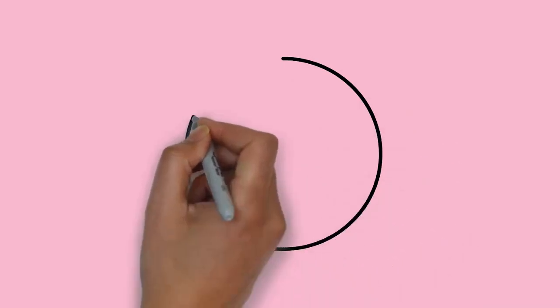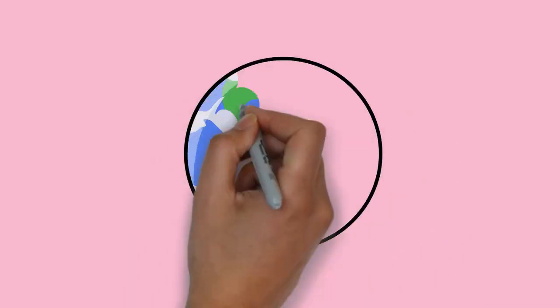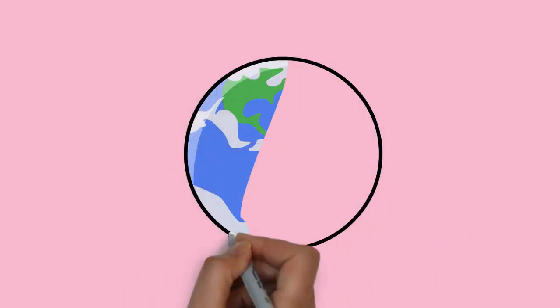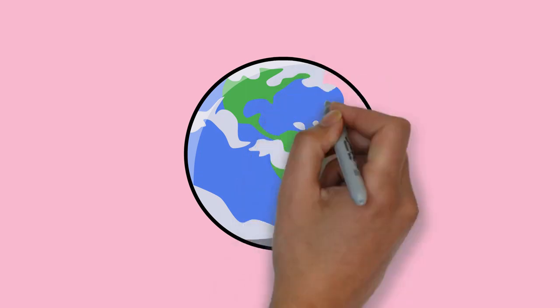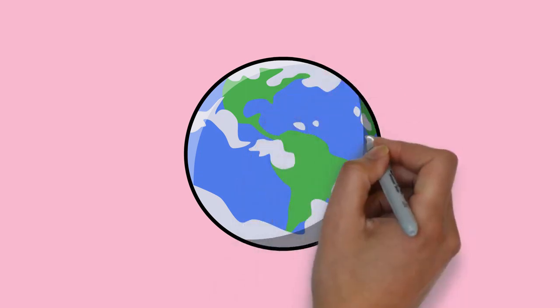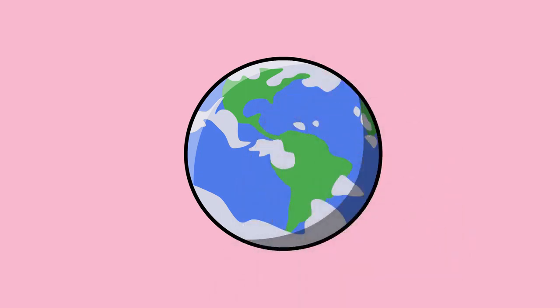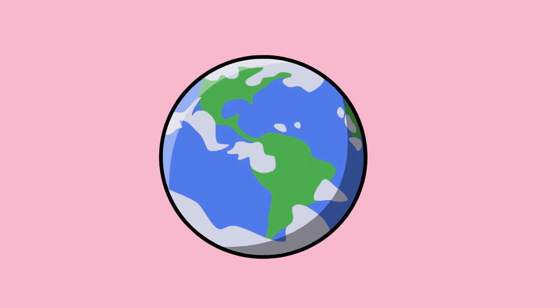Sheep, or domestic sheep, Ovis aries, are a domesticated ruminant mammal typically kept as livestock. Although the term sheep can apply to other species in the genus Ovis, in everyday usage it almost always refers to domesticated sheep.